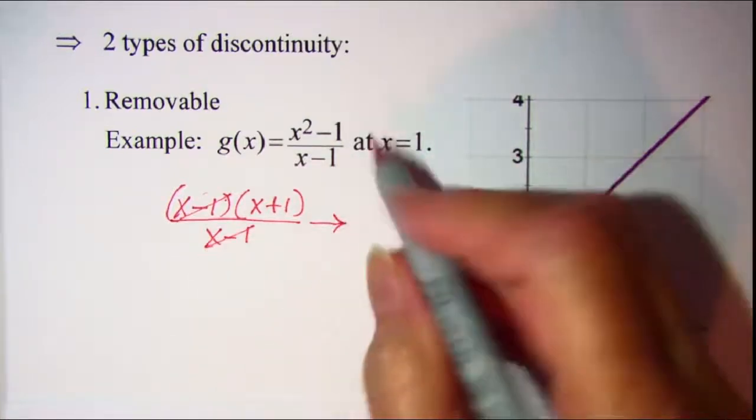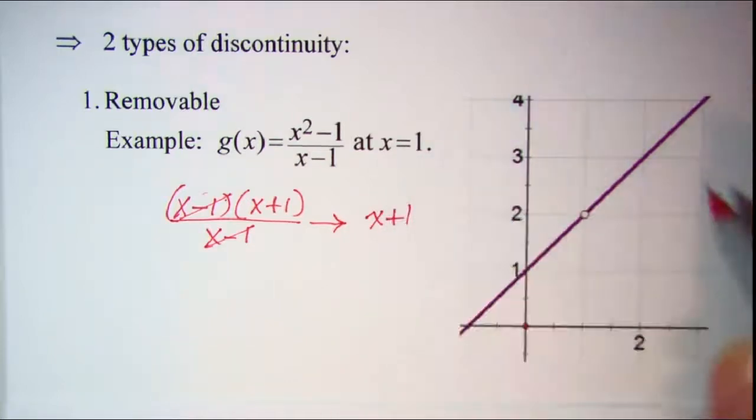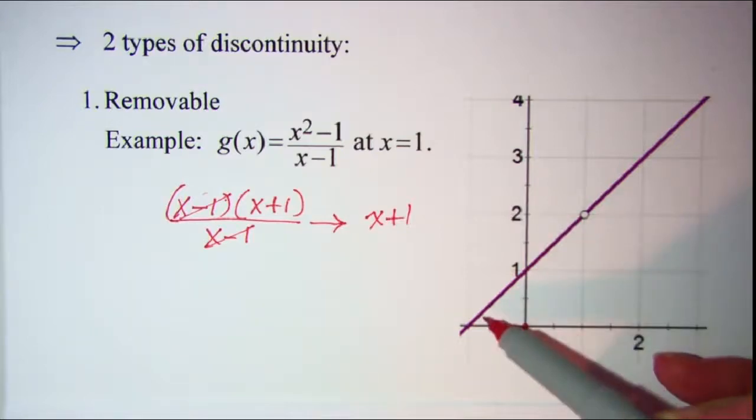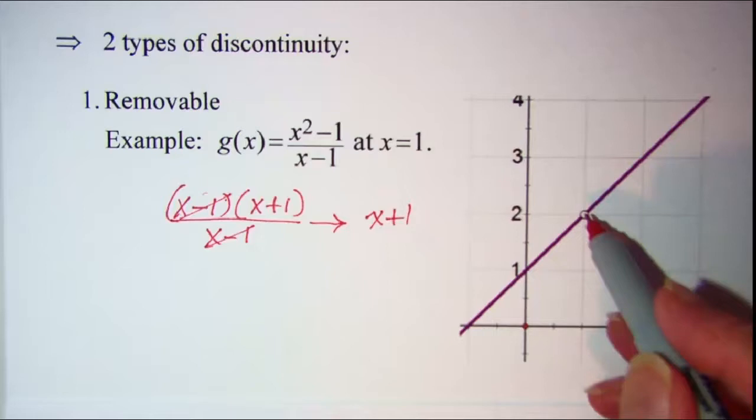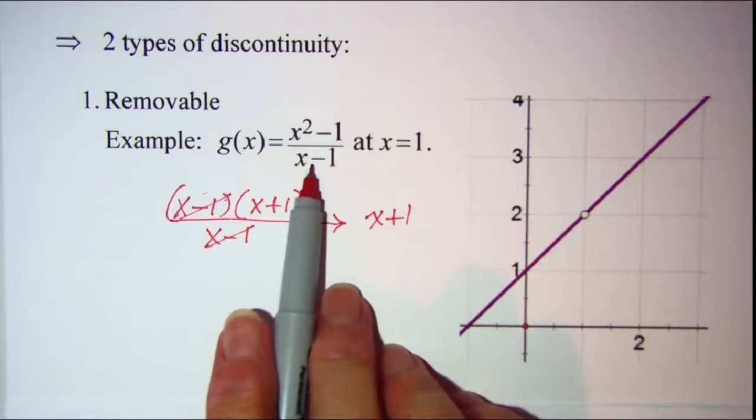So the function behaves like y equals x plus 1 which is a y-intercept of 1 and a slope of 1. So it behaves like this linear function except that we have to have a hole in the graph when x is equal to 1 since it is undefined at that point.